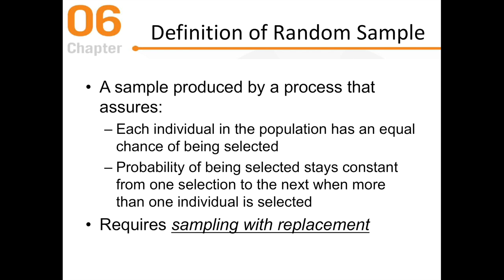We can do random sampling with replacement. A sample produced by this process assures each individual in the population has an equal chance of being selected. For example, five children each have a 20% chance of being selected first. But once you select one child, the remaining children's chances increase to 25%. So you have to do sampling with replacement — if you pick Jimmy, you put Susie in as a replacement — so that everyone from the original pool still has that equal 20% chance.